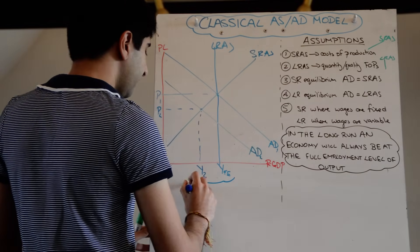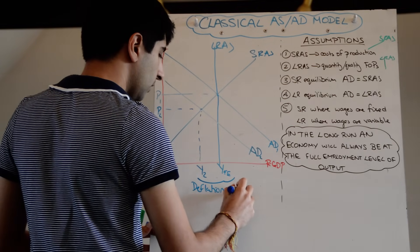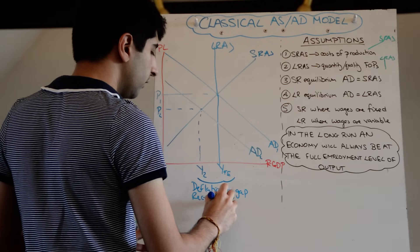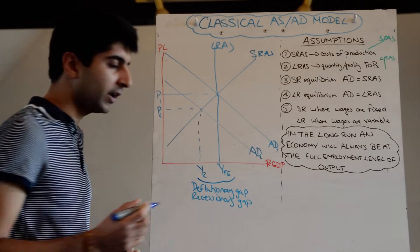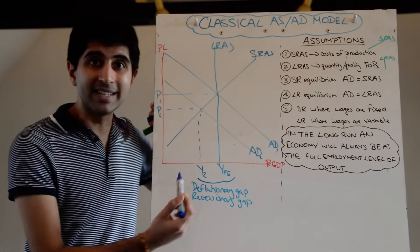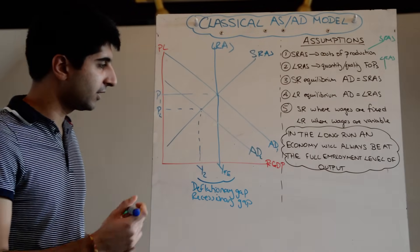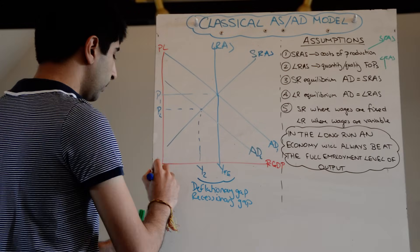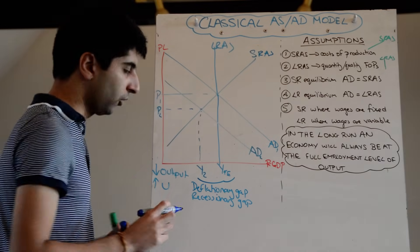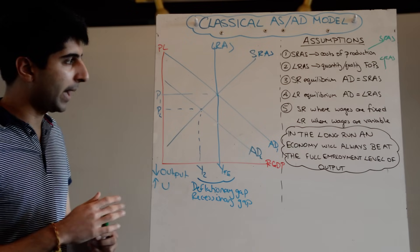This situation is known as a deflationary gap, or recessionary gap. In the classical model, this is a recession with lower levels of output, lower inflation — which could even become deflation — and higher unemployment. These are the key characteristics of a recessionary or deflationary gap.